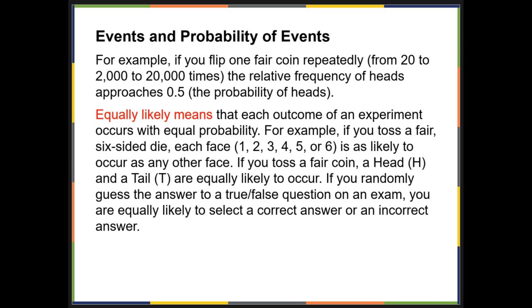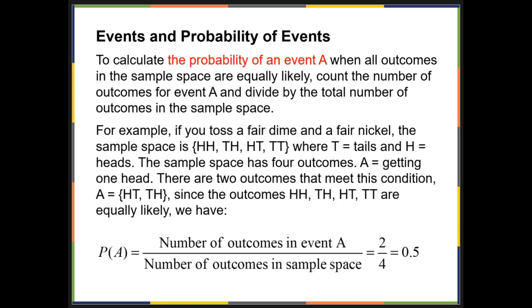If we want to calculate the probability of an event, then what you do is you take the number of outcomes in event A and divide it by the number of outcomes in the sample space. So you basically do the number of outcomes in your scenario over the total number of outcomes.